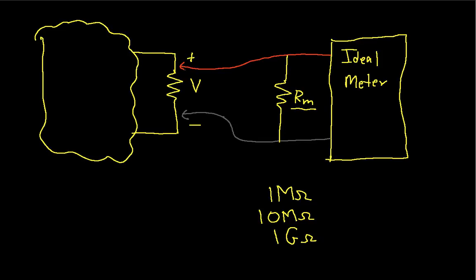And when I do the measurement, something interesting happens. I have the impedance of the meter, it's connected by these probes in parallel to the resistor whose voltage I want to measure.